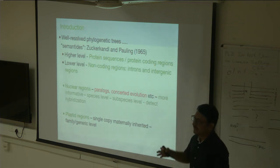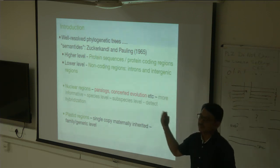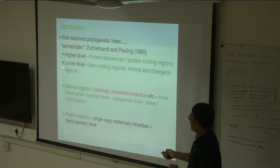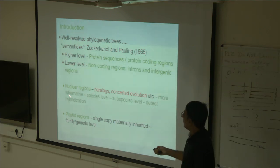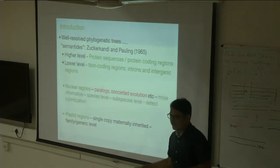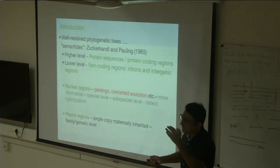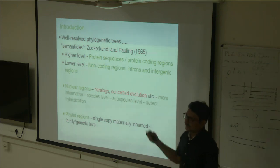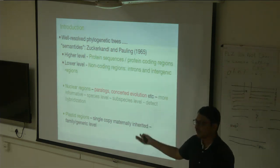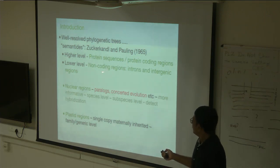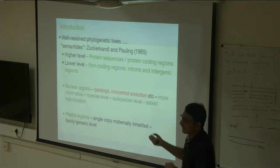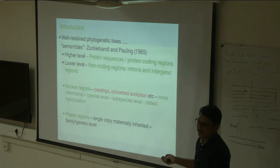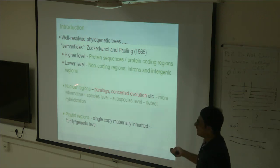Using different biomolecules for understanding evolution, we need to understand evolution at different levels — at higher levels like the family level, and at lower levels like the species level and intraspecific variation. Different kinds of molecules should be used. For higher levels, protein sequences or protein-coding genes are generally used. For lower levels, we use mostly non-coding regions — neutral markers, especially introns and intergenic regions.